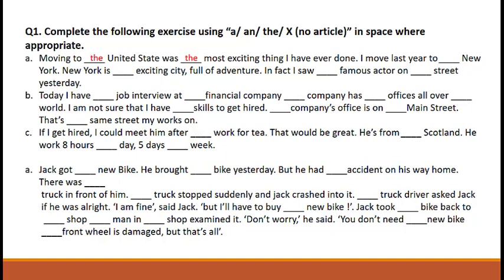'I moved last year to ___ New York.' Children, try to solve this one. No article will come before New York as we do not use articles with the name of cities. 'New York is ___ exciting city full of adventure.' Which article will come before exciting? 'An' will come in the blank because 'exciting' begins with a vowel sound.